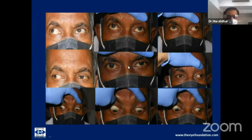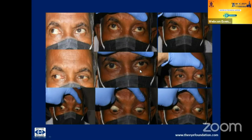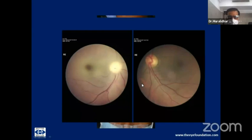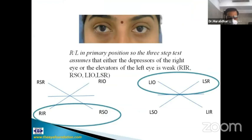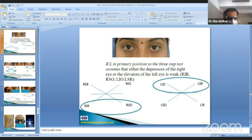One patient recovered from COVID a couple of months prior and presented with double vision. There was a right inferior involvement. The patient had developed myasthenia gravis, had a frozen globe, lost vision in the right eye due to central retinal artery occlusion, and had pansinusitis. This illustrates the importance of considering COVID-related complications in paralytic strabismus presentations.